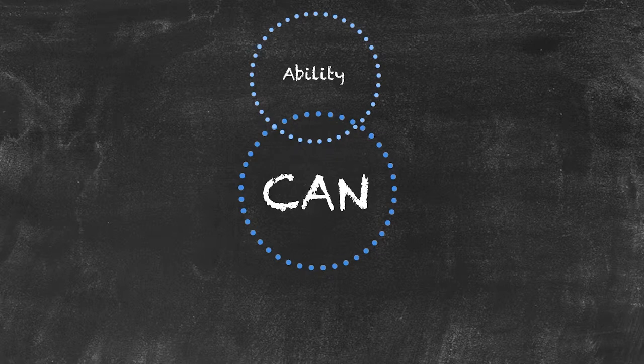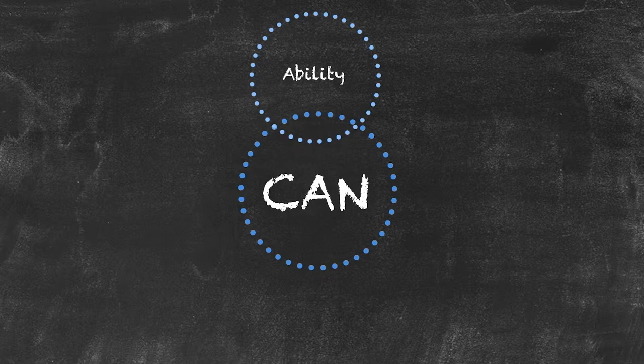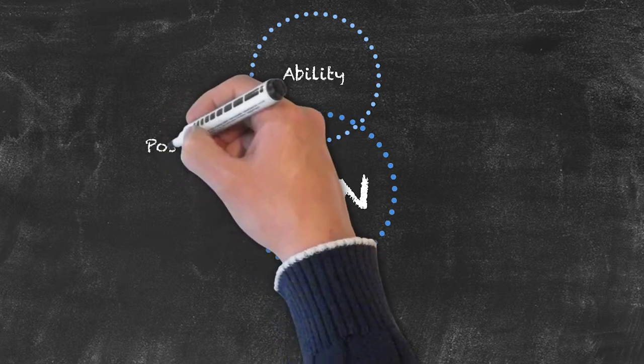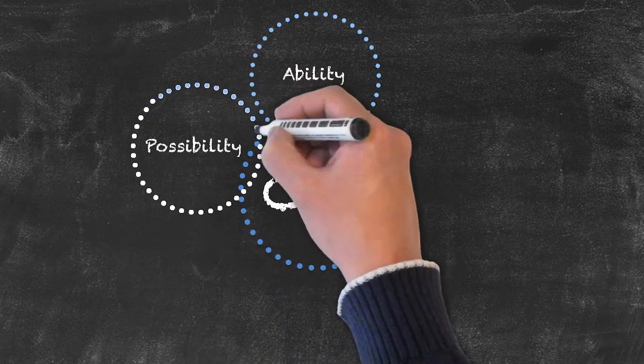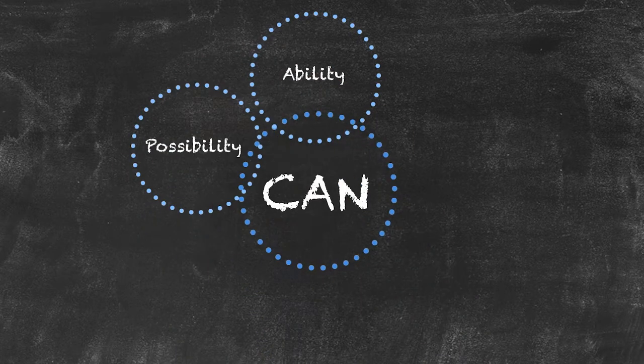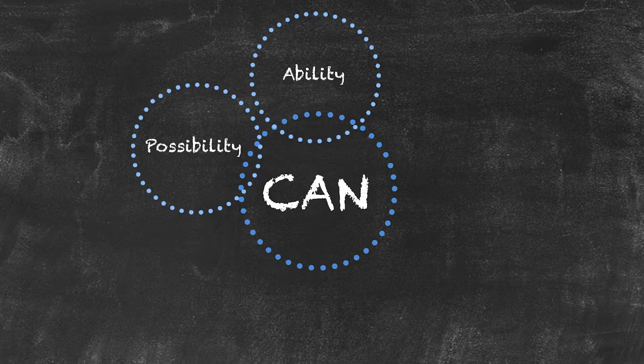And then, as we progress through the levels, we introduce further usages of the same word. Typically, for elementary level students, possibility would be the next usage that is introduced. For example, you can see a movie in a cinema — as it's possible to do it, it's not about ability.